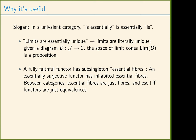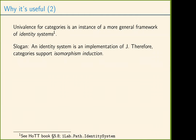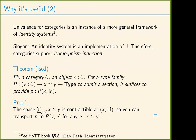Another reason univalence is useful is that univalence for categories is an instance of a more general framework for characterizing identity types of other types. We say that some space of objects equipped with a relation — in this case isomorphism — is contractible. By virtue of having this characterization, we have induction in the sense of path induction for isomorphisms. If you have some property P of every iso in your category, as long as one endpoint is free, it suffices to prove it for the identity isomorphism. We'll see a use of this in the last slide.